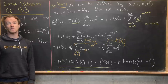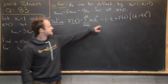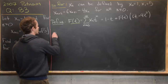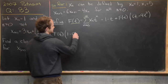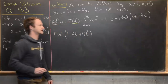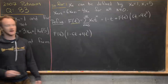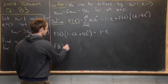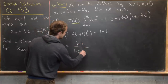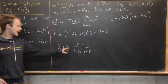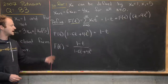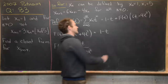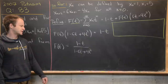We solve for F(t): F(t)(1 − 6t + 4t²) = 1 − t, so F(t) = (1 − t) / (1 − 6t + 4t²). To decompose using partial fractions, we find the roots of 4t² − 6t + 1 using the quadratic formula: t = (6 ± √(36−16)) / 8 = (6 ± 2√5) / 8 = (3 ± √5) / 4.